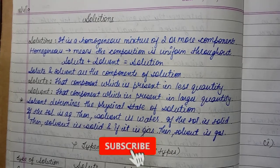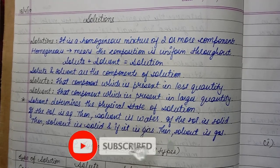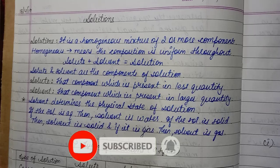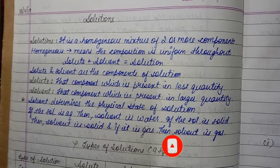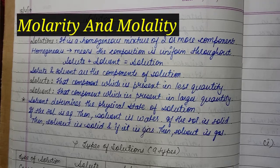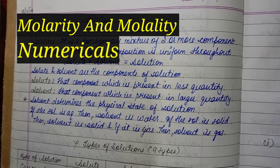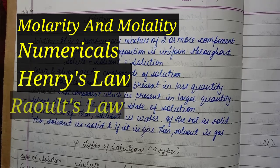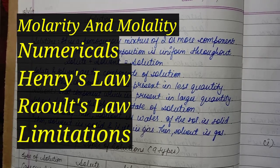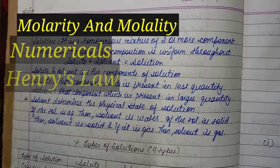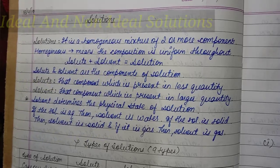In this chapter there are some important topics — if you focus on these you can score very well. The first important topics are Molarity and Molality, and the maximum numericals come from these topics. Then Henry's Law and Raoult's Law, along with their limitations — this is also an important topic.